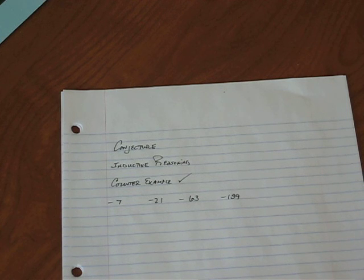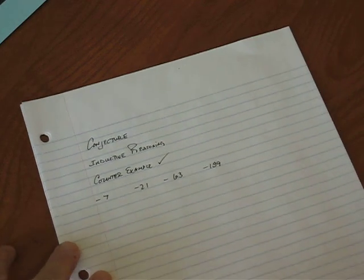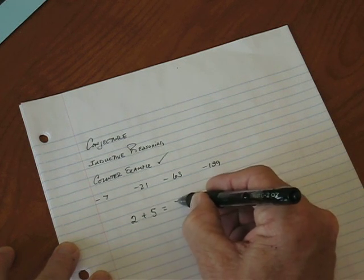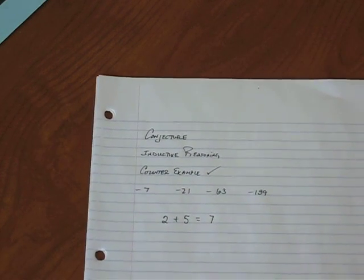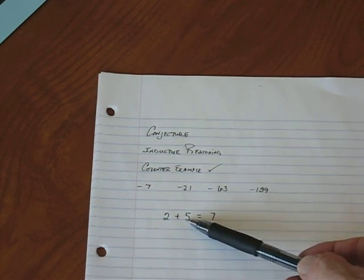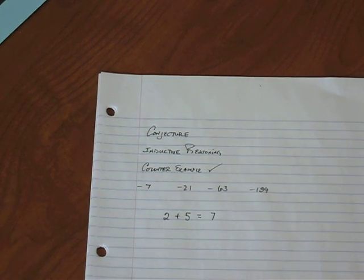So for example, if someone said, a student makes the following conjecture, a sum of two numbers is always greater than the larger of the two numbers you're adding. So that conjecture was, if I take two numbers and add them together, the sum of those two numbers is always bigger than the larger number of the two. I'm telling you, that conjecture is false.